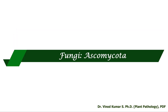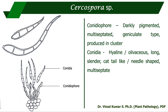Ascomycota is one of the biggest phyla under kingdom Fungi, encompassing many genera and species. In the asexual stage, the spores are called conidia, and the stalk-like structure is called a conidiophore. For Cercospora: the conidiophores are darkly pigmented, multiseptate, and geniculate — meaning they have sharp bends similar to knees — and produced in clusters. The conidia may be hyaline or olivaceous, and are long, slender, needle-shaped or cat-tail-like, and multiseptate.